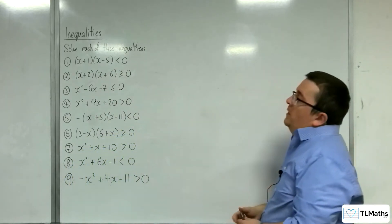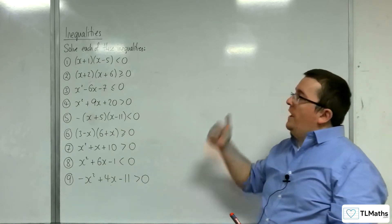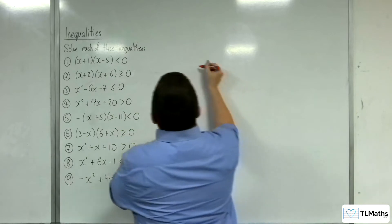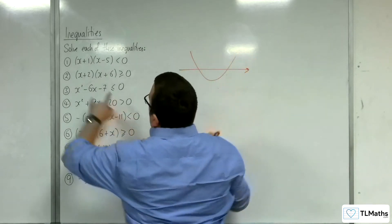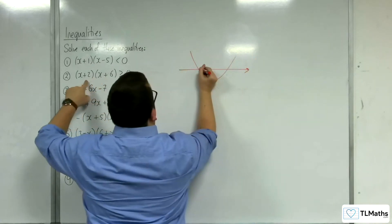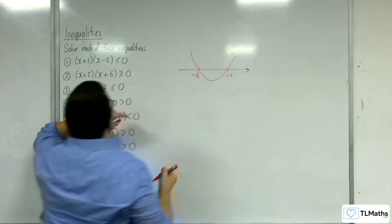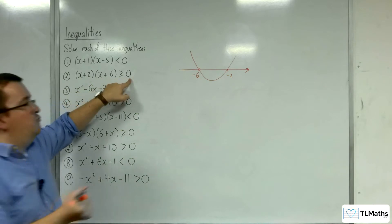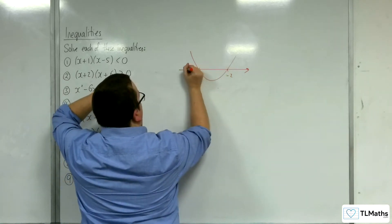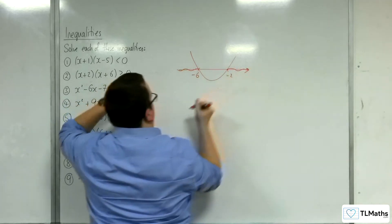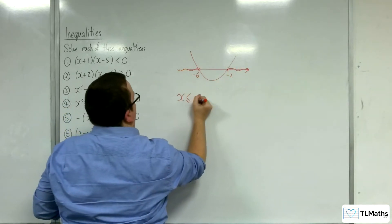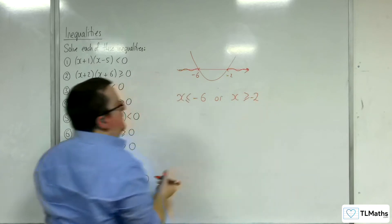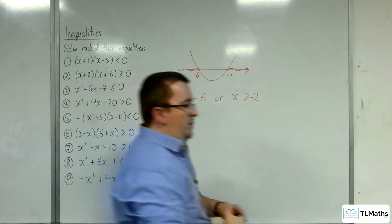Number two: (x+2)(x+6) ≥ 0. We've got 0 on the right-hand side and it's factorised, so let's draw a parabola. It's going through −6 and −2. We're looking at where the graph is above or equal to the x-axis — that's there and there. So x ≤ −6 or x ≥ −2.